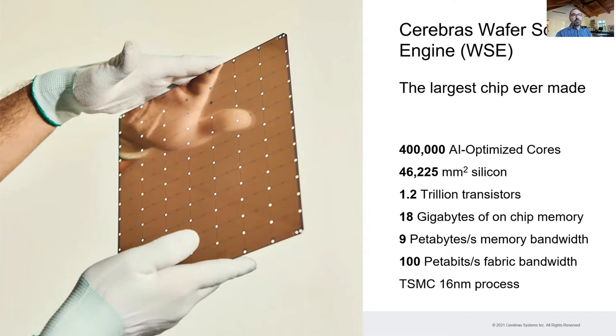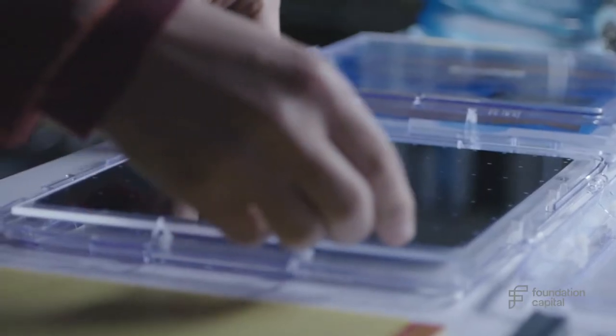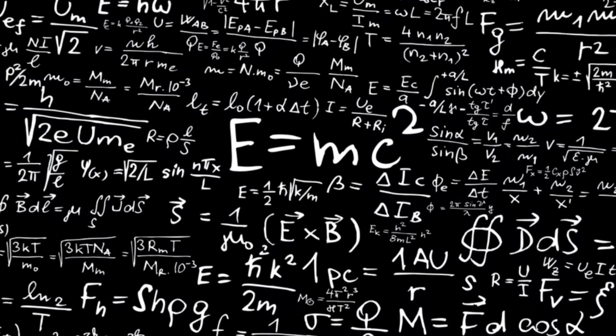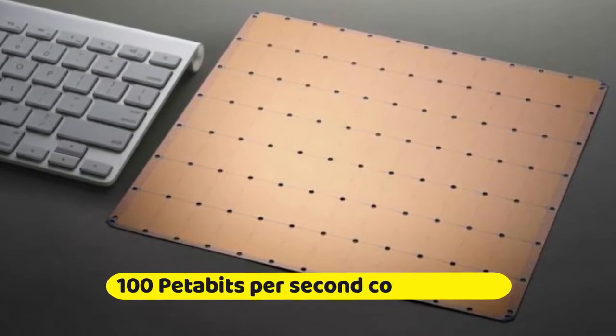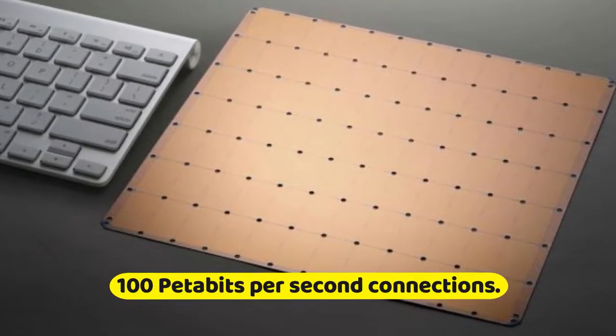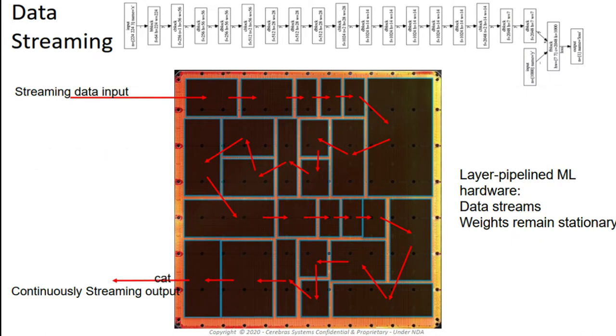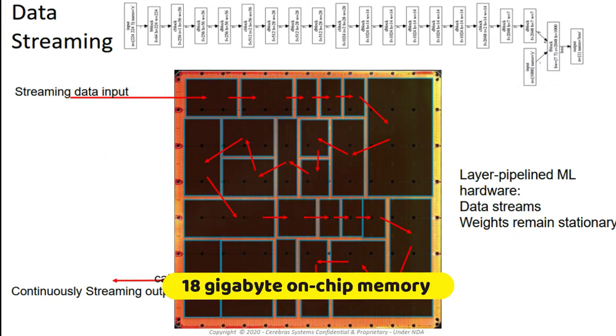The chip has 400,000 AI-optimized cores, called Sparse Linear Algebra Cores, or SLAC. The cores are designed to perform large-scale linear algebra operations efficiently using sparse matrices. The cores are connected together by 100 petabits per second connections. The data is fed to the cores using 18-gigabyte on-chip memory with 9 petabytes per second bandwidth.